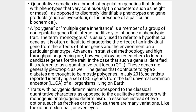Quantitative genetics is a branch of population genetics that deals with phenotypes which vary continuously in characters such as height or the mass of an organism. It is opposed to discretely identifiable phenotypes and gene products such as eye color or the presence of a particular biochemical in the body.